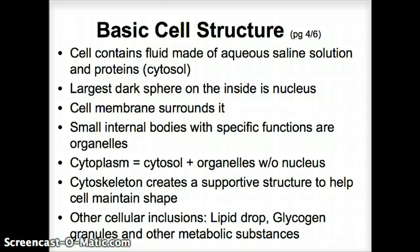The cytoskeleton is a little skeleton inside the cell, made mainly of collagen fibers, and it creates a supportive structure that helps the cell maintain its shape. We also have other inclusions such as lipid droplets or glycogen granules. Glycogen consists of sugar molecules linked together that we can easily use — we discussed that in chemistry. And of course there are other metabolic substances as the cell works and does its job.